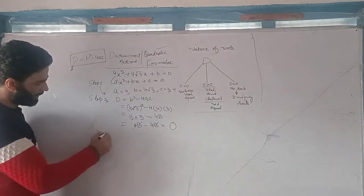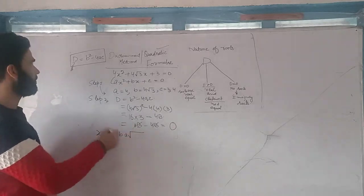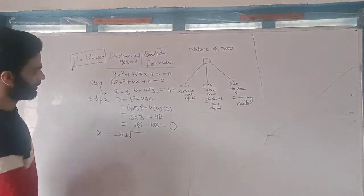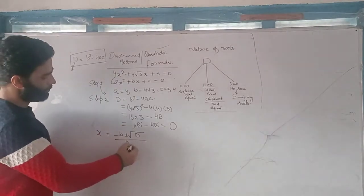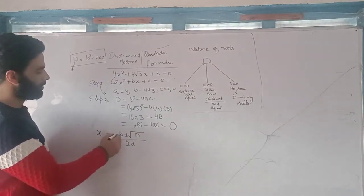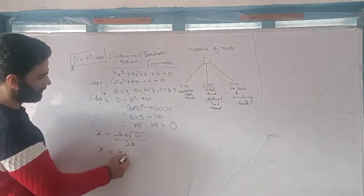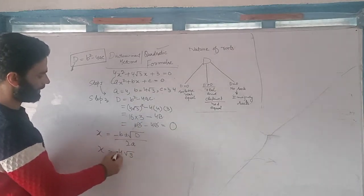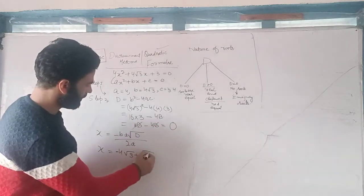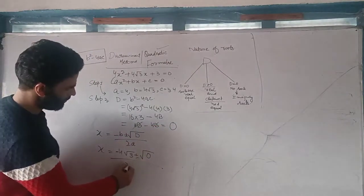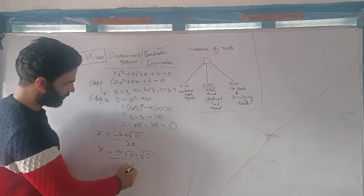The quadratic formula is x is equal to minus b plus or minus under root of D, divided by 2a. Now I will substitute the values here. x is equal to minus b — the value of b is 4 under root 3 — plus or minus under root of D. D we have already found, that is 0. Divided by 2 into a, and the value of a in our quadratic equation is equal to 4.